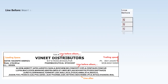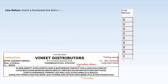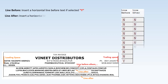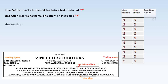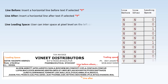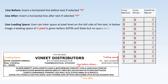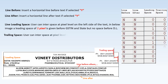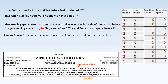Line Before inserts a horizontal line before the text if set to Y; Line After inserts a horizontal line after the text if set to Y. Line Leading Space allows users to enter space at the pixel level on the left side of the text — for example, a leading space of one pixel is given before GSTIN and State but not before DL. Trailing Space allows users to enter space at the pixel level on the right side — for example, one pixel trailing space is given after Phone but not after Mobile.